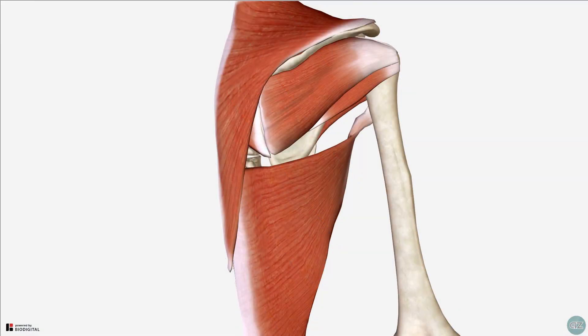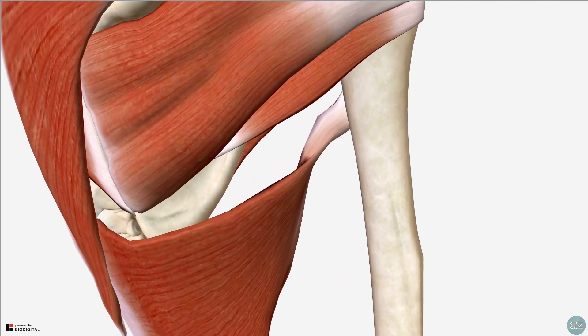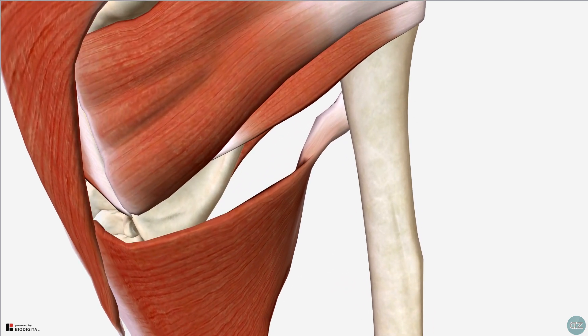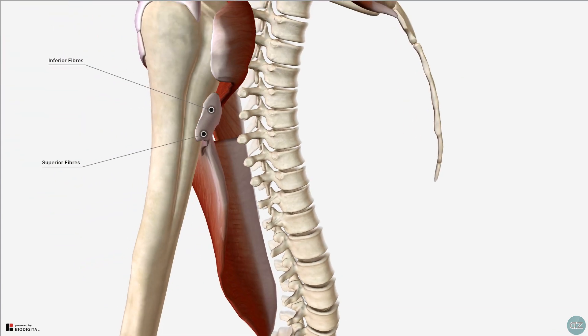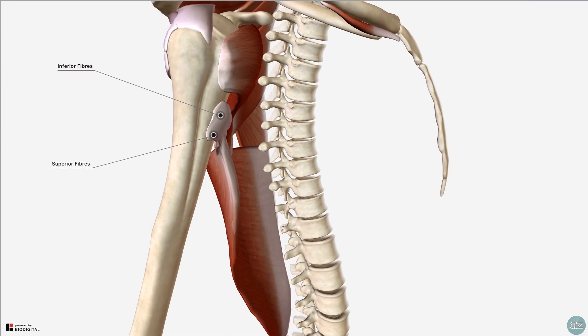Returning to the posterior view, just before inserting, the muscle fibres twist, which means that the superior fibres at the midline of the muscle insert on the lowest part of the sulcus, and the lower fibres at the midline insert higher on the sulcus.